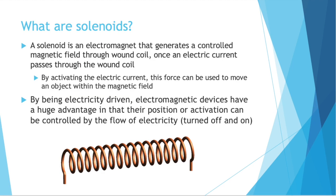What are solenoids? A solenoid is an electromagnet that generates a controlled magnetic field through a wound coil — a bunch of wire wrapped around itself. By passing an electric current through that wire, you generate that electric field. That electric field has poles, just like an old-fashioned magnet.